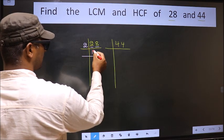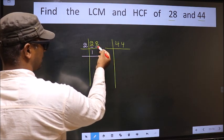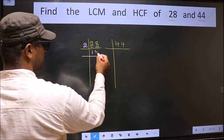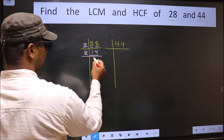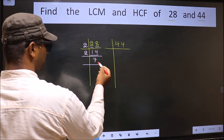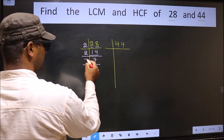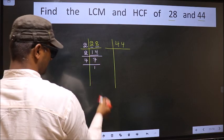When do we get 8 in 2 table? 2 times 4 is 8. Now here we have 14. 14 is 2 times 7 is 14. Now we have 7. 7 is a prime number, so 7 times 1 is 7.